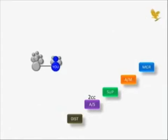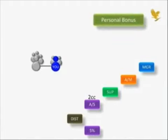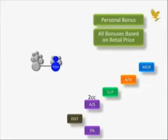As an Assistant Supervisor, you receive a bonus on all your personal activity after you move up. This is called a personal bonus and is equal to 5% of the suggested retail price of your personal activity, as reflected by the orders you place in your own name and the orders placed online by your retail customers. One of the great advantages of the FLP plan is that all bonuses are based on the suggested retail price.